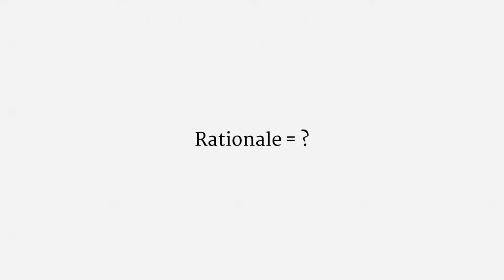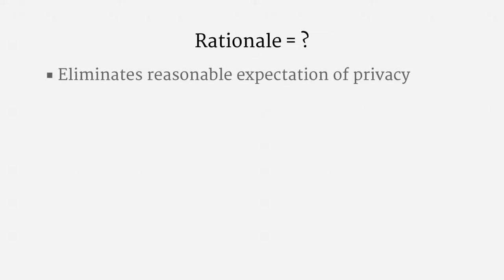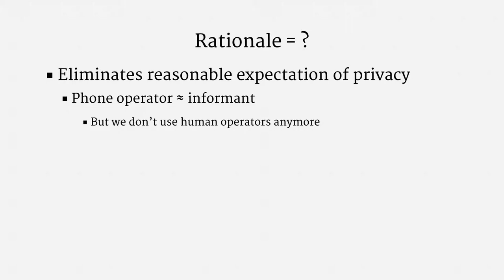The legal rationale for the Third Party Doctrine is deeply ambiguous. Courts and scholars aren't in alignment. One theory is that volunteering information to a third party eliminates a reasonable expectation of privacy. Courts sometimes base this view on the notion that a human phone operator is like a human informant. And since human informants aren't covered by the Fourth Amendment, neither are human operators. Of course, we don't use human phone operators anymore, so the human informant analogy breaks down fairly quickly.